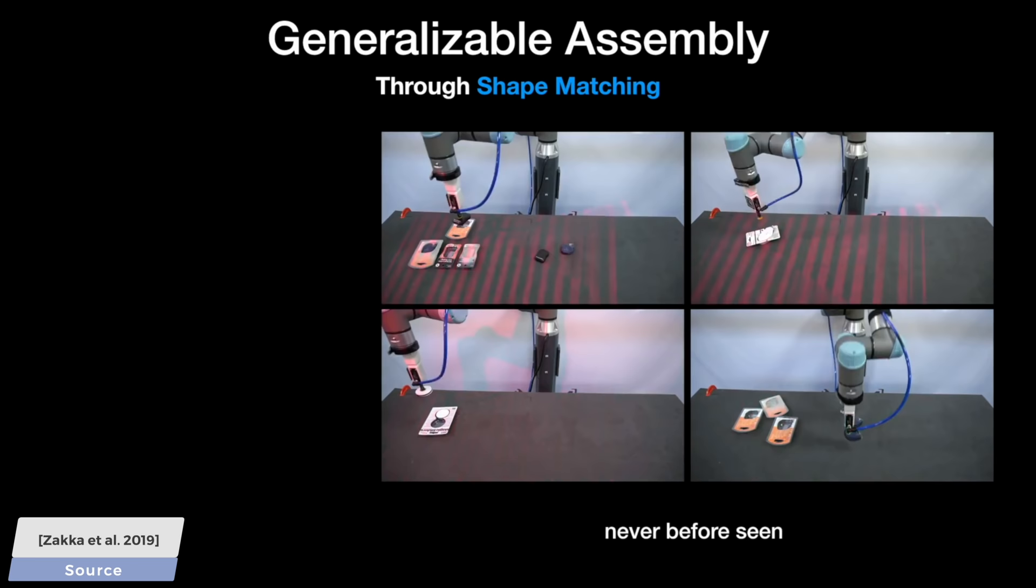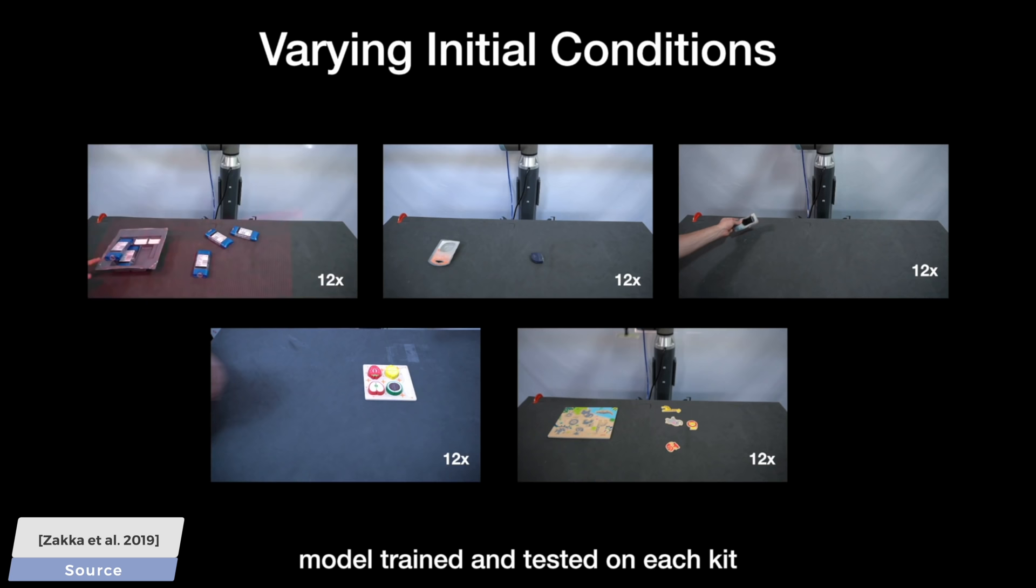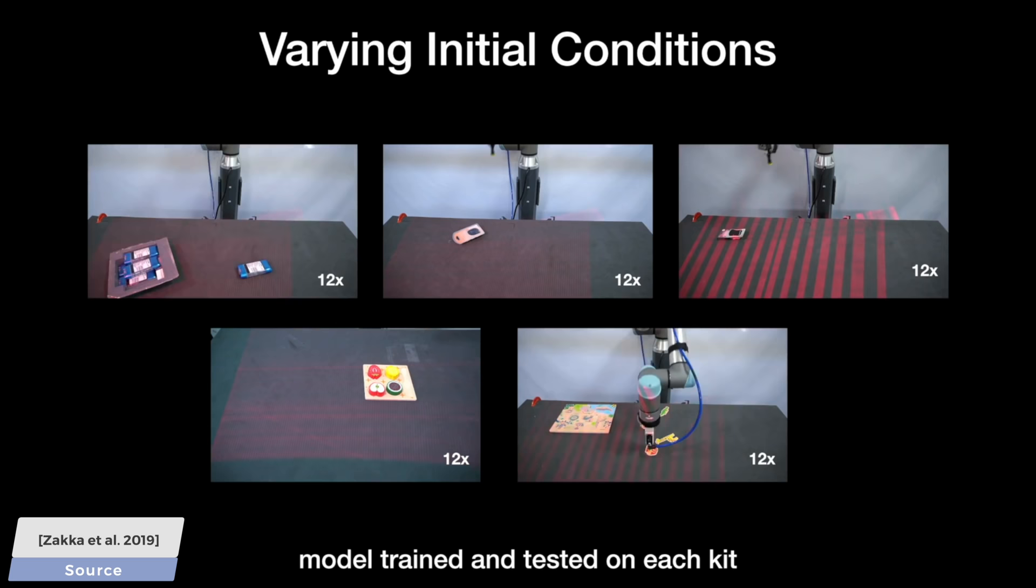Normally, to train such an algorithm, we would have to show it a lot of pairs of the same contraption and tell it that this is what it looks like when it's disassembled, and what you see here is the same thing assembled. If we did this, this method would be called supervised learning. This would be very time-consuming and potentially expensive, as it would require the presence of a human as well.